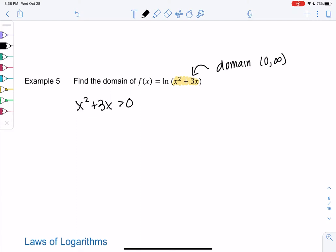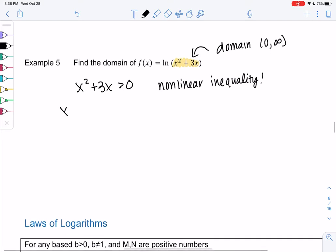We have a nonlinear inequality. We haven't done this in a while, but these are really important in calculus, so I'm glad we get to review them. Don't move anything. We're going to factor instead. So x times x plus 3 greater than 0. And then we're going to mark those critical points.